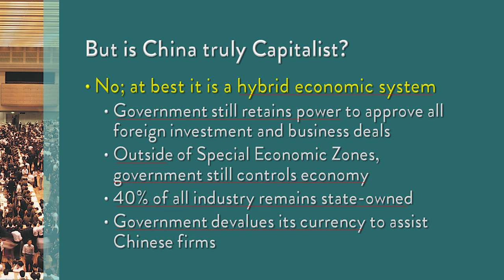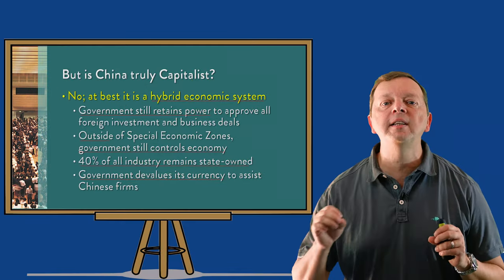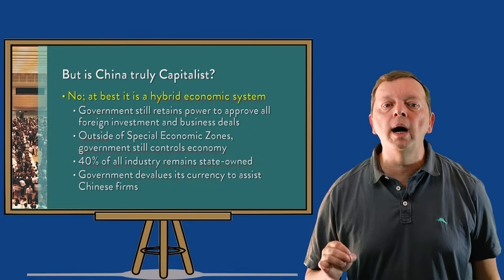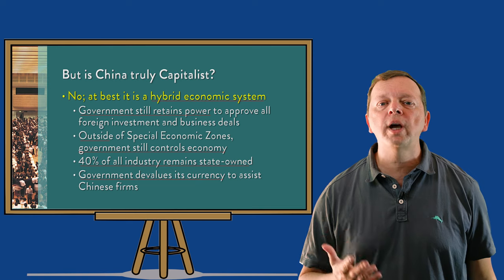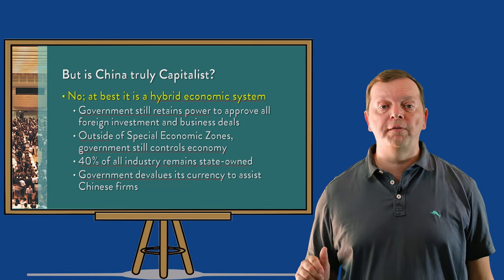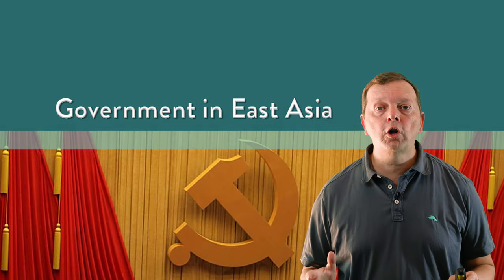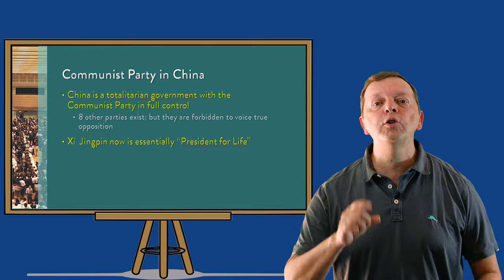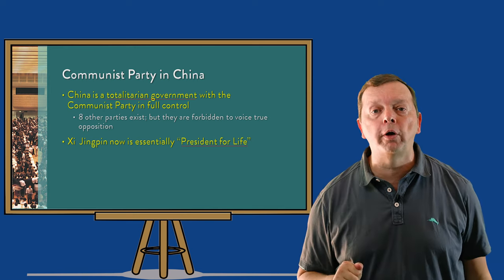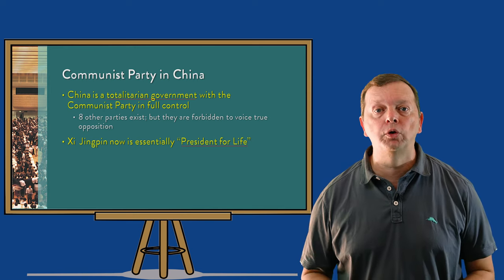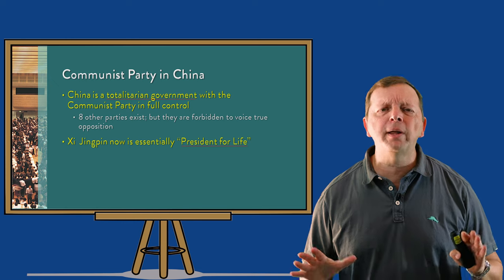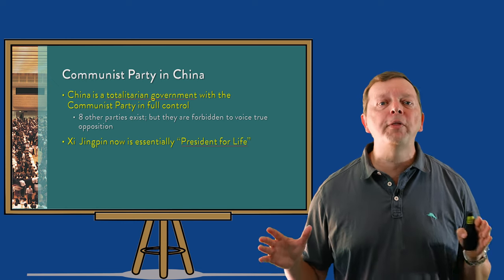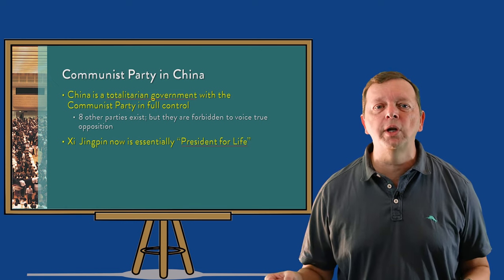The government also takes steps to assist Chinese firms by devaluing the Chinese yuan — its currency — to make Chinese products artificially cheaper on foreign markets. Now, if China's government has so much power, what type of government is it? As all communist countries have been, it is a totalitarian government. It only has one ruling party — the Communist Party — which has full control of the government. In theory there are eight other parties, but they are forbidden from voicing opposition.